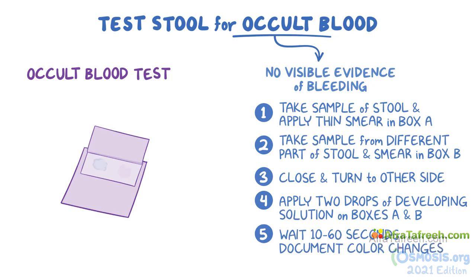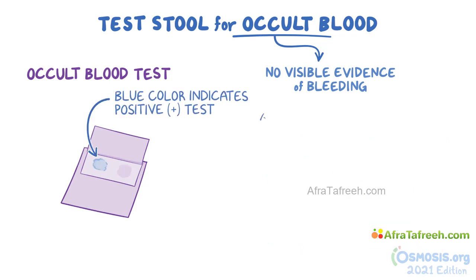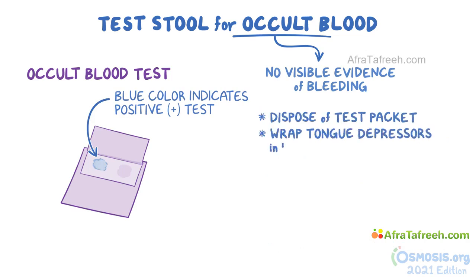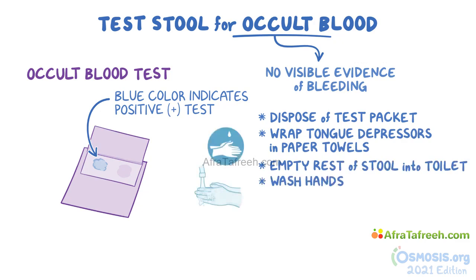Document the color changes. A blue color indicates a positive test for occult blood in the stool. Dispose of the test packet safely. Wrap the tongue depressors in paper towels or toilet tissue and dispose of them. Empty the rest of the stool into the toilet. Wash your hands. Finally, make sure to clean and return the equipment to the right place.